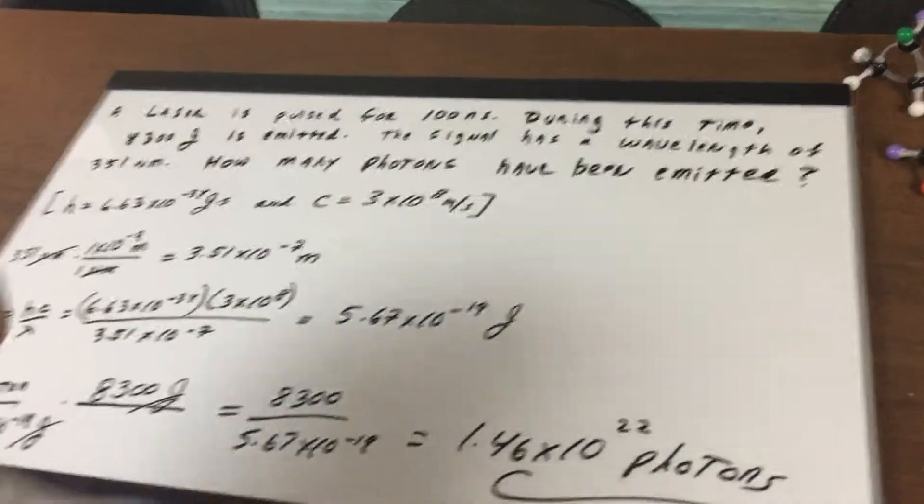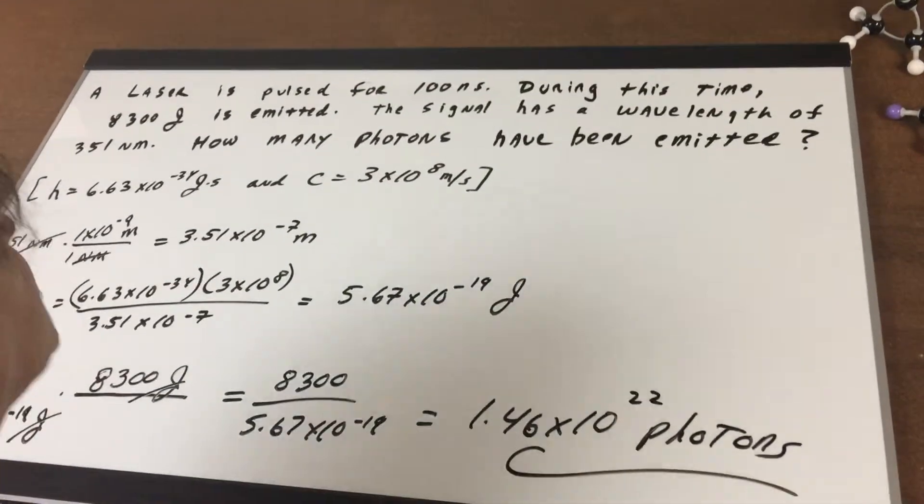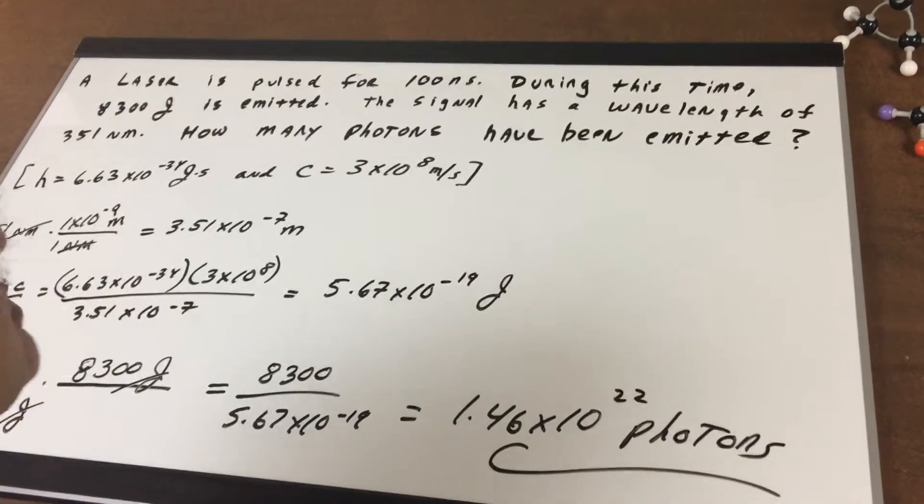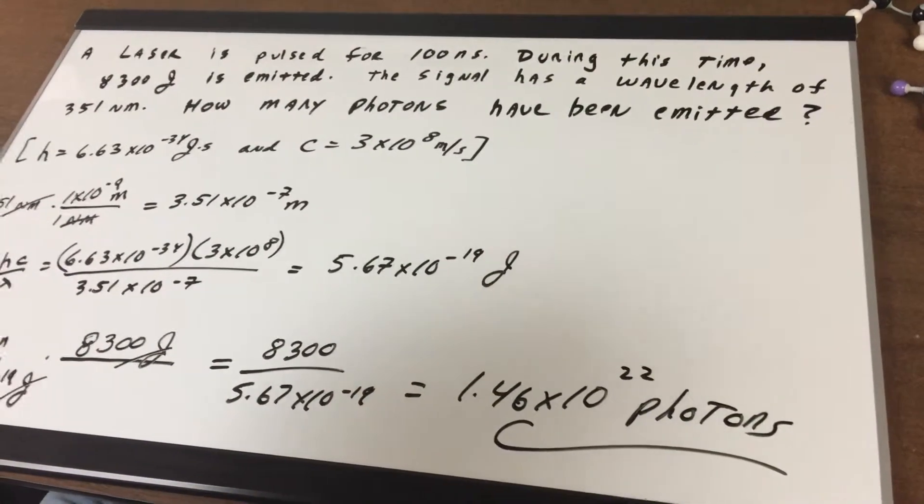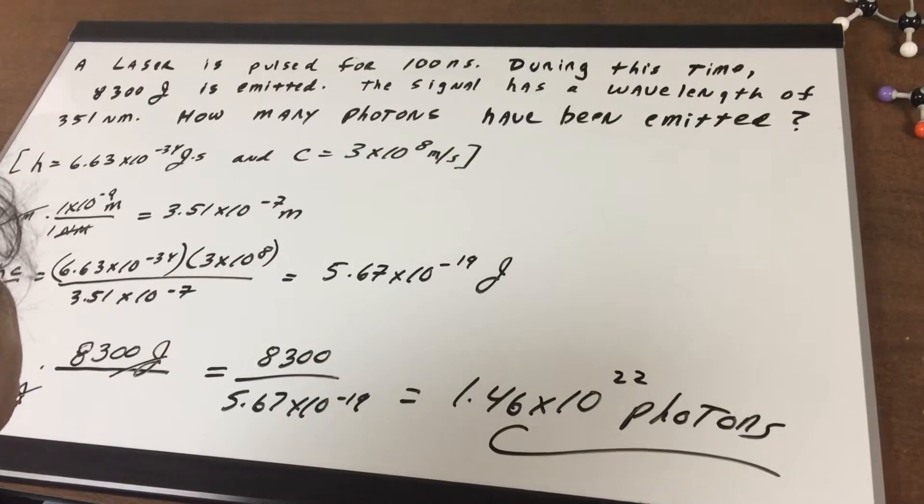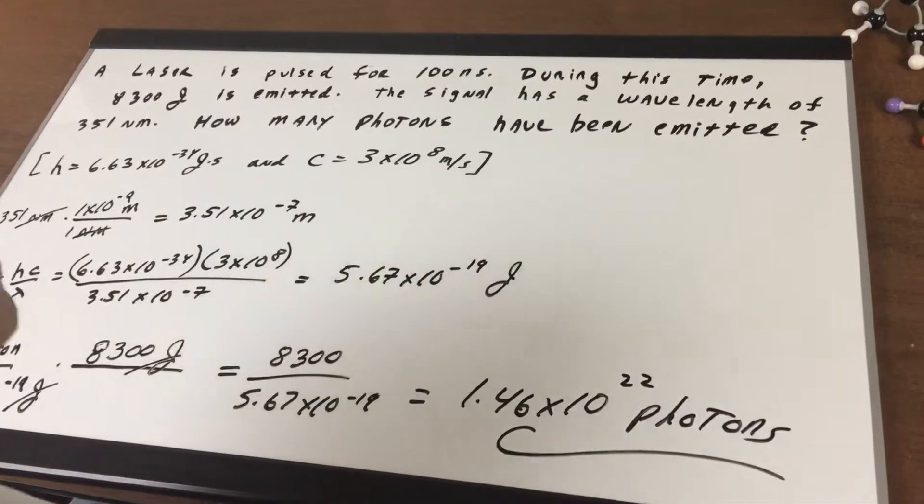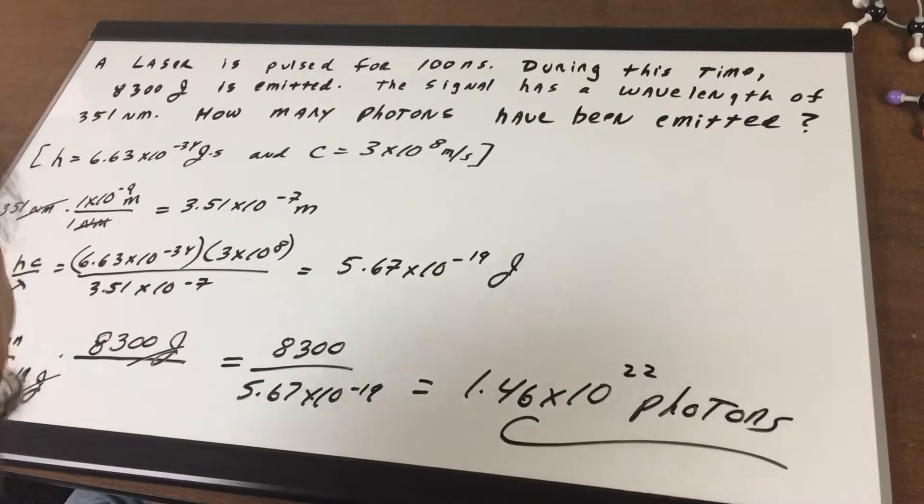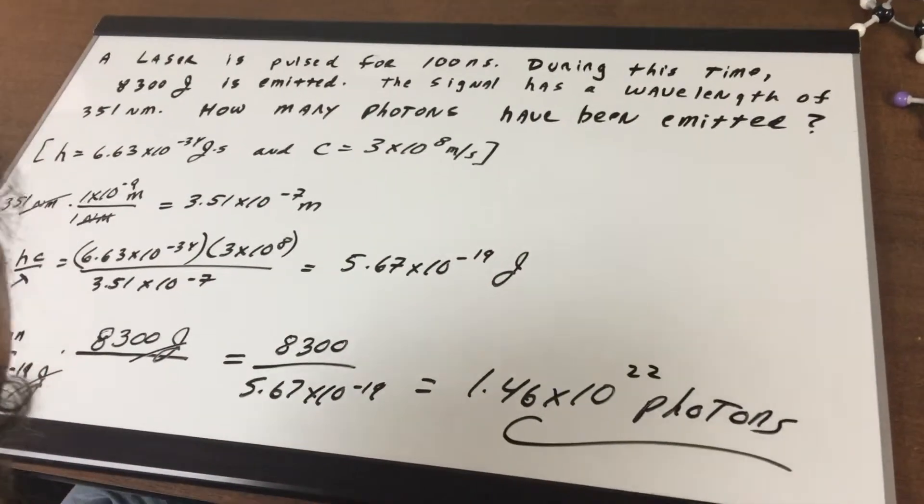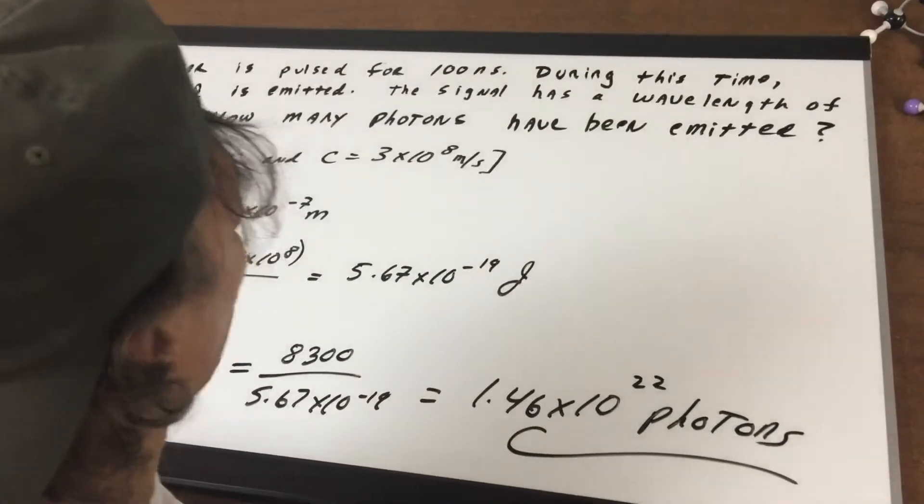I say to you in this question that a laser is pulsed for 100 nanoseconds. During this time, 8300 joules is emitted. Now if you remember, the joule is the SI unit of energy. Now the signal has a wavelength of 350 nanometers. How many photons have been emitted?